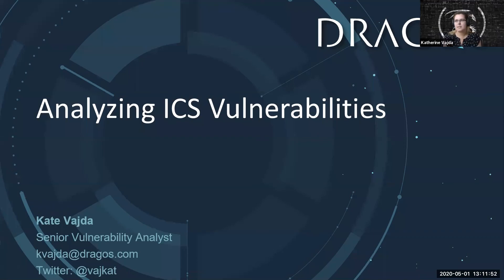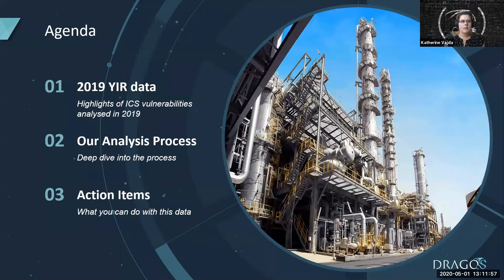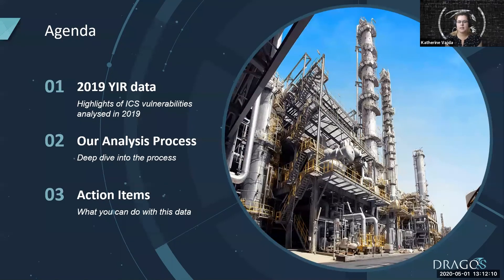We're going to be talking about analyzing ICS vulnerabilities. We want to start with the agenda. I'd like to go over our 2019 year in review report, discuss some of the key findings and what they mean and how you should be interpreting that data. Then I'll go over our process and how we do our own analysis and arrive at that data. And lastly, I want to talk about what you can do with the data in your own environments.